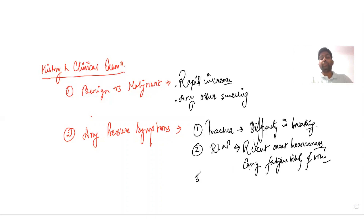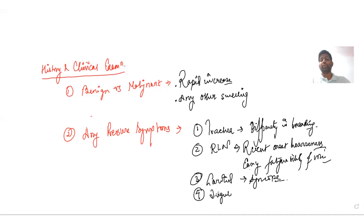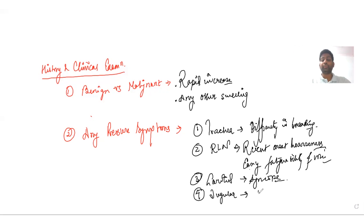Other structures that may get compressed include the carotid vessels — if compressed, the patient will have recurrent episodes of syncope — and the jugular vessels, whose compression compromises venous return, leading to puffiness of the face. So the first two important history points are distinguishing benign from malignant, and identifying any pressure symptoms.